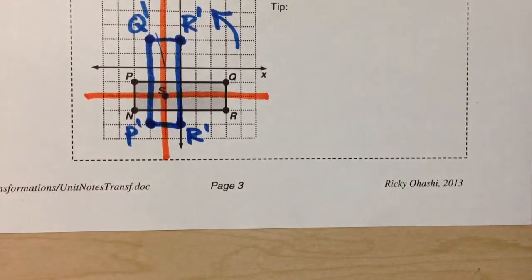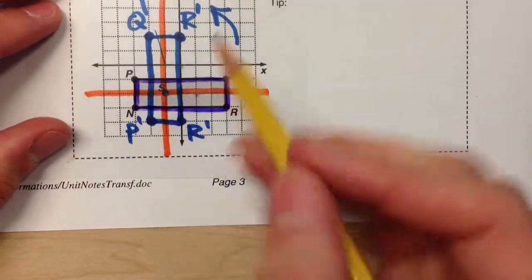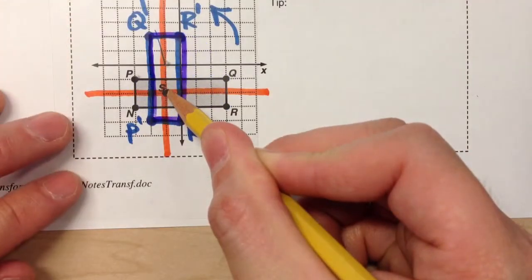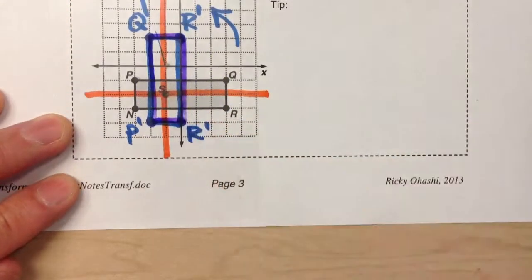If you want to double check it, here's my original shape on tracing paper. My pencil point's on S. It lands right where it needs to be.